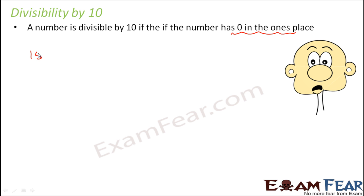So let us look at some examples. 15900. Do you think this is divisible by 10? Of course, because there is a 0 at its unit space. So this is divisible by 10.